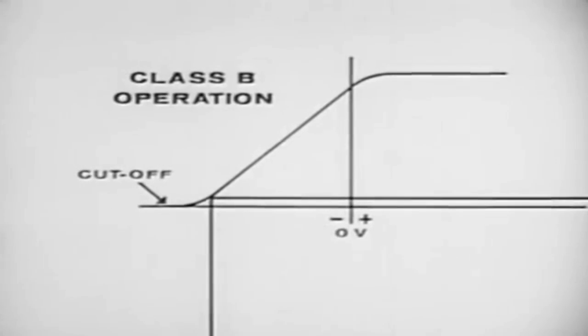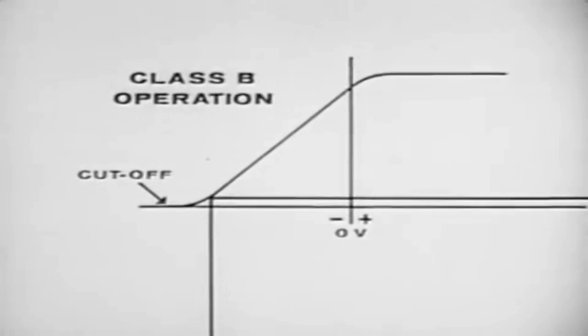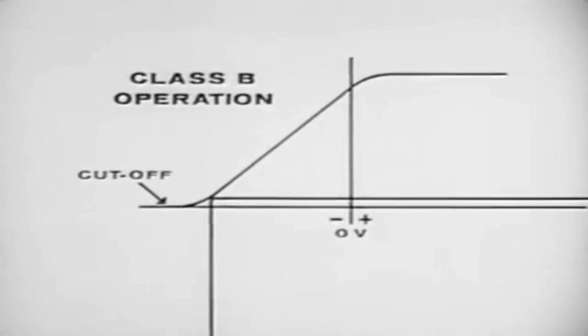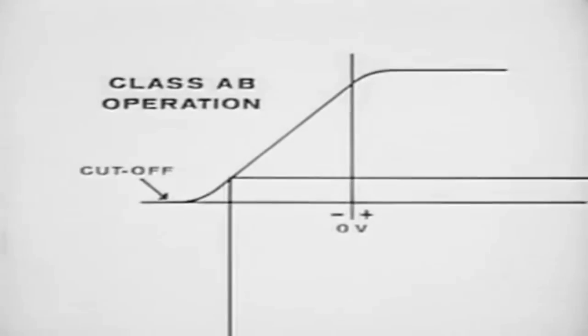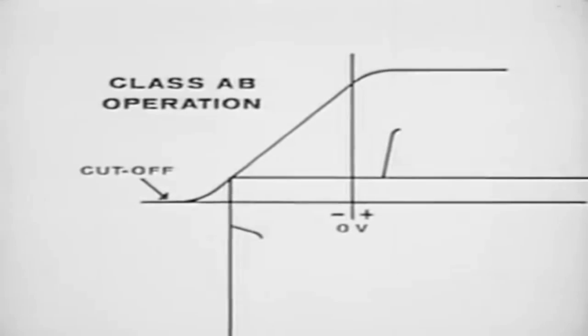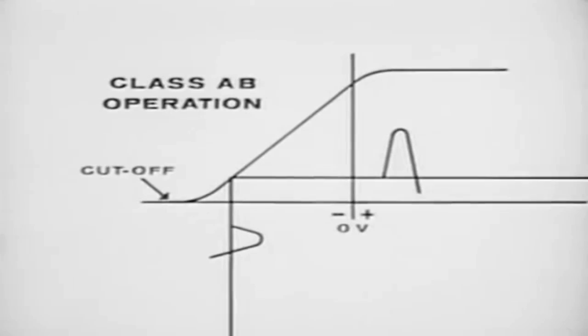If we bias the tube at or near cutoff, it is a Class B amplifier. Note that plate current, represented by the upper waveform, flows for only slightly more than 180 degrees of the input cycle. If we bias the tube between Class A and Class B, we have a Class AB amplifier. Again, note the relationship between plate current flow and the input cycle.